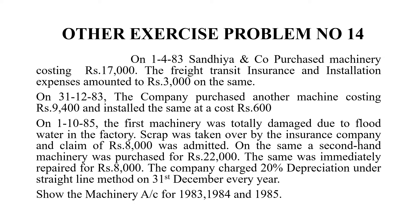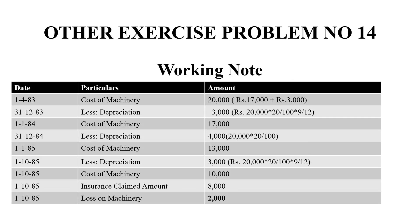The accounting year ends every year on 31st December. Now in the third year, we will be able to create a machinery account. So when we create the machinery account, we will be able to claim the rough working. That is why we have damage to claim from the insurance company, and we will be able to calculate the profit or loss.